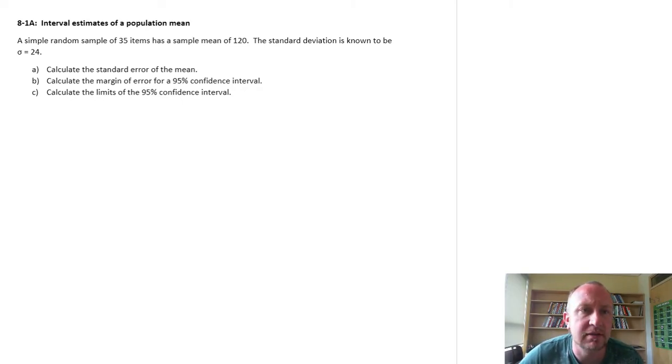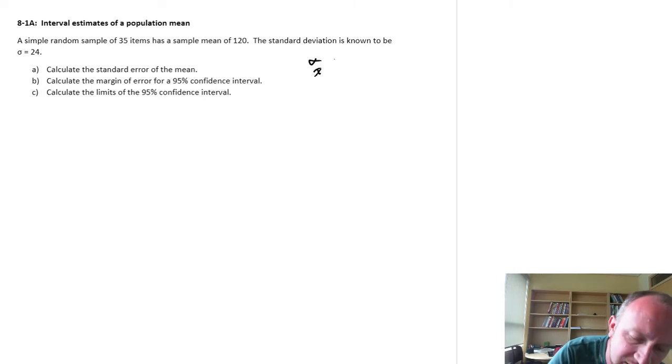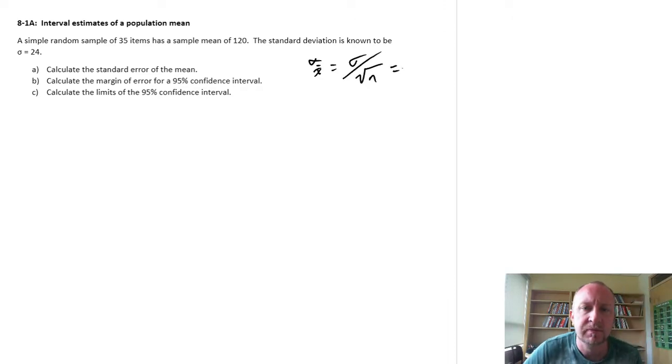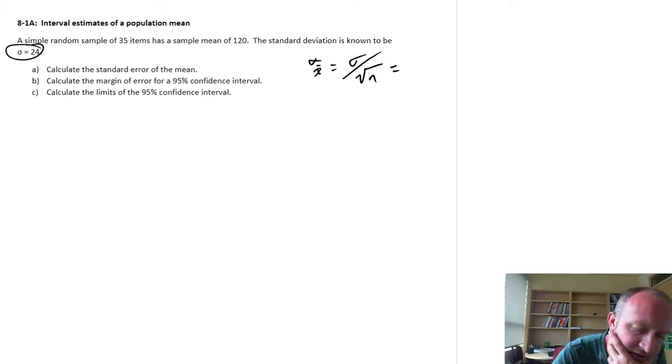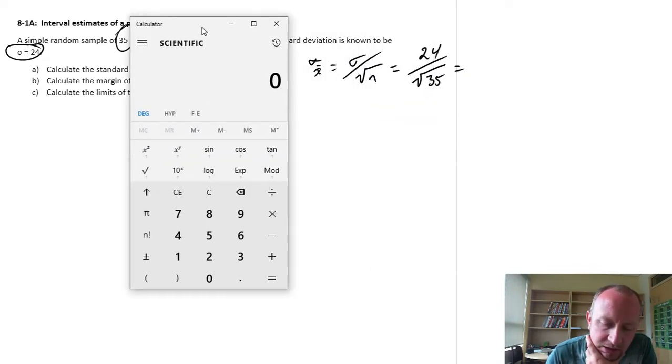So let's just get into part A, calculate the standard error of the mean. So all that means when we're looking at the standard error, this is denoted sigma x bar and this is the standard deviation divided by the square root of the sample size. So in this case we have a standard deviation of 24, sample size is 35. So this is just 24 divided by the square root of 35 and so here's my calculator.